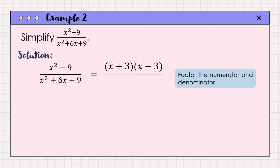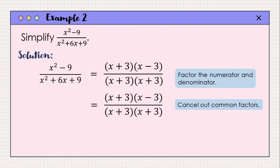The denominator is a perfect square trinomial. The factored form of a perfect square trinomial is a square of a binomial, and we write the expanded form of that binomial. So the factored form of x squared plus 6x plus 9 is written as quantity x plus 3 multiplied by quantity x plus 3. After writing the factors of the numerator and denominator, we cancel out the common factor, which is quantity x plus 3. The remaining factors give us quantity x minus 3 over quantity x plus 3. So the simplified form is x minus 3 over x plus 3.